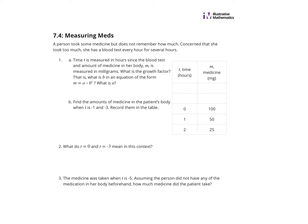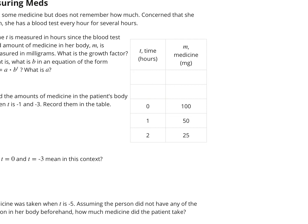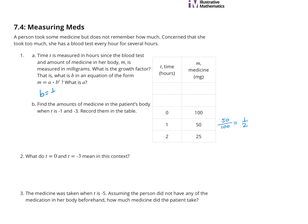Question one: time T is measured in hours since the blood tests, and M is the amount of medicine in her body in milligrams. What is the growth factor B in the equation M equals A times B to the T power? The growth factor is how much is left, not how much has been lost. To find it, we take an amount — in this case 50 — divided by the previous amount, 100. So 50 over 100 is 1/2. The growth factor B equals 1/2. And A, the y-intercept when T is 0, equals 100.